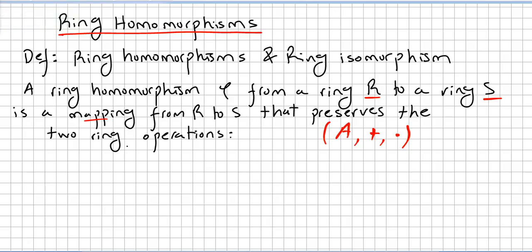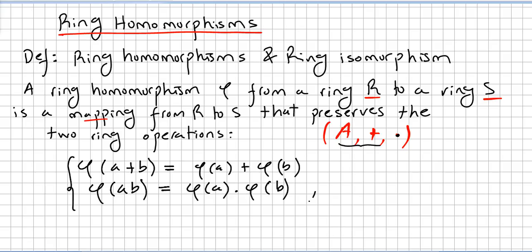So we have to preserve the two ring operations. One is the group operation. So we need φ(A+B) to be φ(A)+φ(B). And we need the other operation, multiplication, so we need φ(AB) to be φ(A)φ(B). Of course, this is for all A and B in the ring.